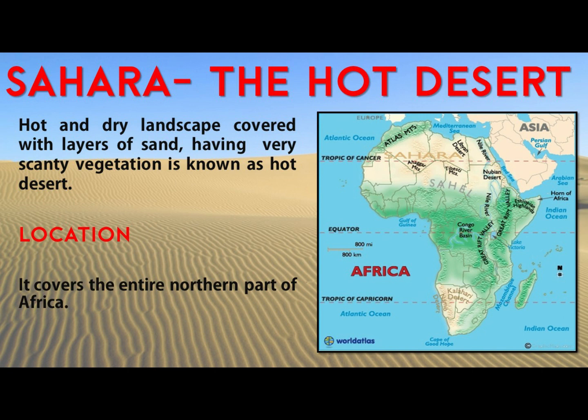Sahara — the hot desert. A hot and dry landscape covered with layers of sand having very scanty vegetation is the identification of hot deserts. The Sahara is the world's largest and hottest desert on earth. Sahara is an Arabic word which means desert. As you can see on the map, the northern part of the entire Africa continent is covered with the Sahara desert. It is surrounded by the Atlantic Ocean, Red Sea, Mediterranean Sea, and huge mounds of sand towards the south, with the Atlas Mountains towards the north.